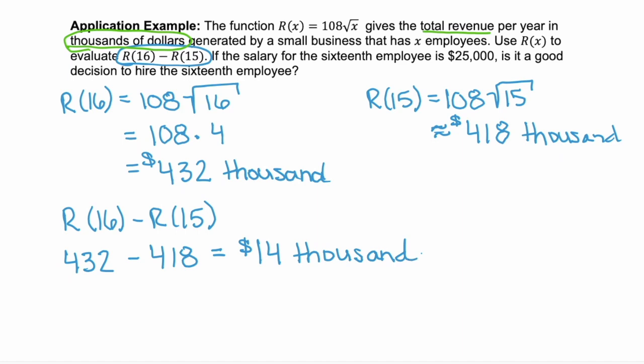Or, by changing from 15 employees to 16 employees, our revenue grows $14,000. So $14,000 is the revenue generated by employee 16.